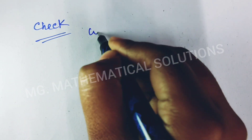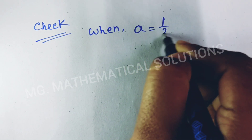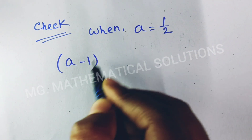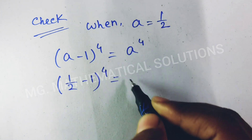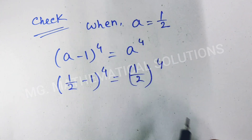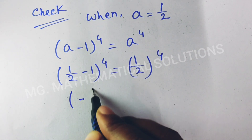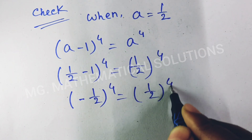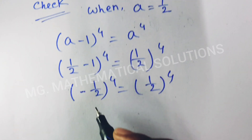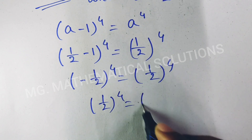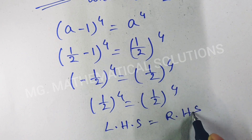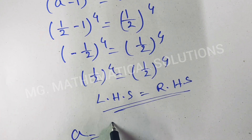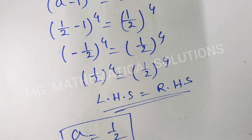Now we check the value when a equals one half. The equation is (a minus 1) whole to the power 4 equal to a to the power 4. Substituting: (half minus 1) whole to the power 4 equal to half to the power 4. That gives (minus half) to the power 4 equal to half to the power 4, which is half to the power 4 equal to half to the power 4. Left hand side equals right hand side, so the equation is satisfied. Therefore a equal to half is a valid solution.